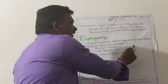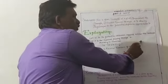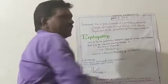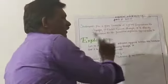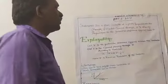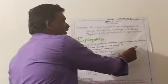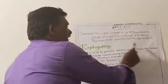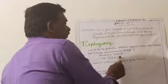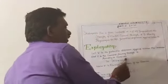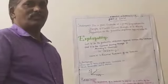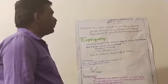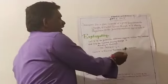The slope of this straight line equals tan theta, which equals I by V. And we know that I by V is equal to one by R.